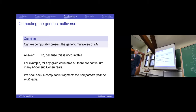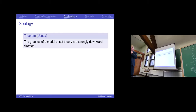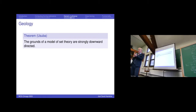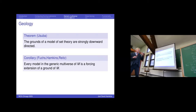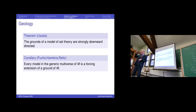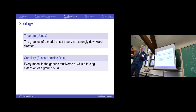I'm using a theorem of Usuba, who proves that the grounds of a model of set theory are strongly downward directed, which means that if I have a set number of indices in the ground model enumeration process, the question is whether there's a common deeper ground underneath them all. The answer is yes — that was one of the principal open questions of set-theoretic geology in our main initial paper. We didn't know the answer, but Usuba answered it. As a corollary: every model of the generic multiverse is a forcing extension of a ground, so you don't have to zigzag — just go down and then up, two steps suffice.